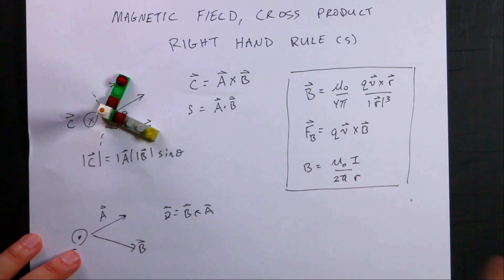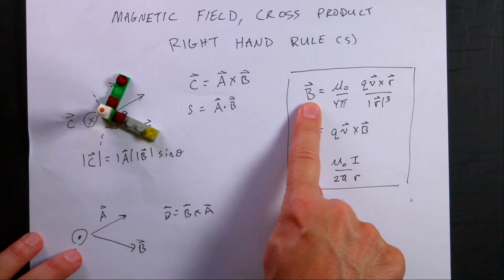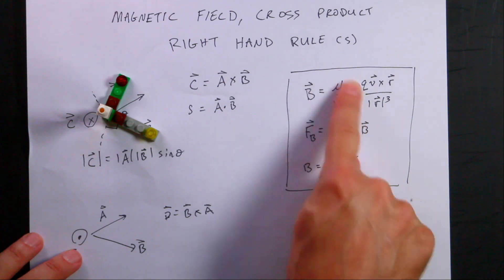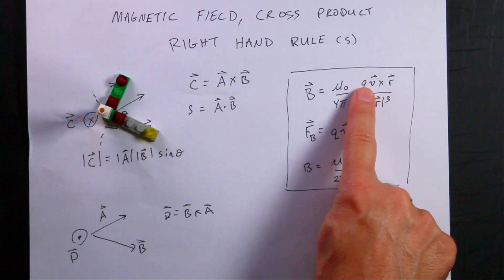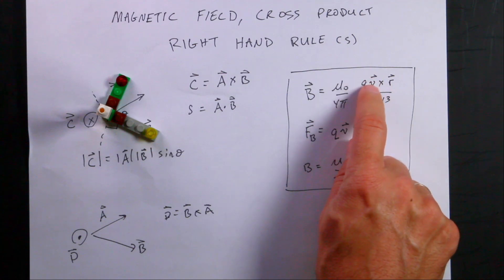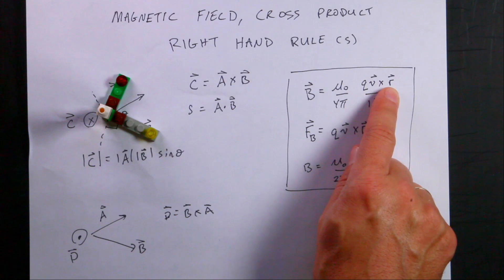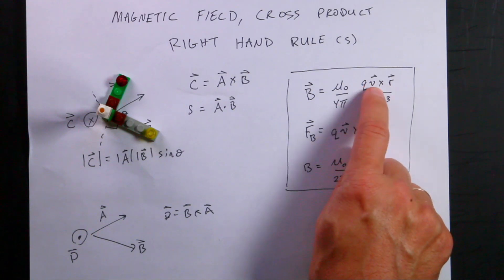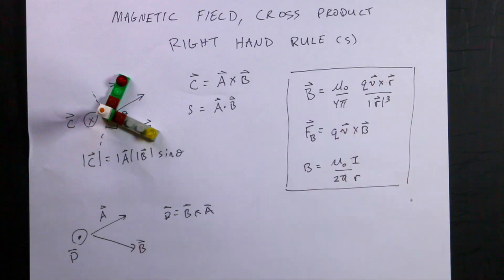Let's talk about why we care about the cross product — because of this: the definition of the magnetic field due to a moving charge. This involves a magnetic constant, the charge times the velocity qv — very important, because if you have a negative charge, the direction is opposite to the velocity vector — and the vector r from the point to where you want to find the field. This is a cross product, so you can find the direction of the magnetic field with this.